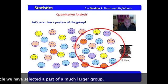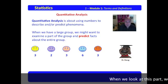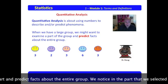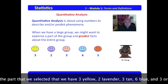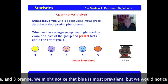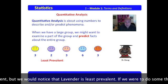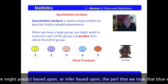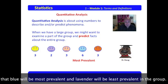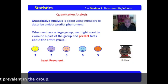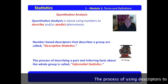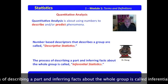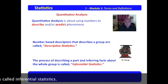In this circle, we have selected a part of a much larger group. We might examine that part and predict facts about the entire group. In the selected part, we have three yellow, two lavender, three tan, six blue, and three orange. Blue is most prevalent, but lavender is least prevalent. Using inferential statistics, we infer that blue will be most prevalent and lavender will be least prevalent in the whole group. Describing a group is descriptive statistics; describing a part and inferring facts about the whole is called inferential statistics.